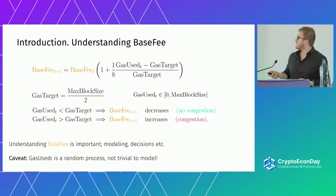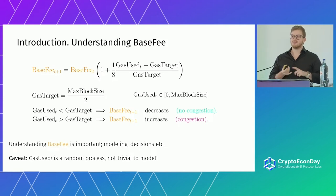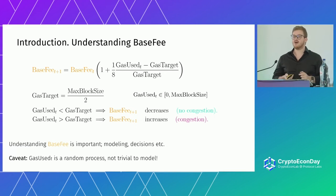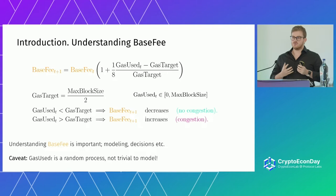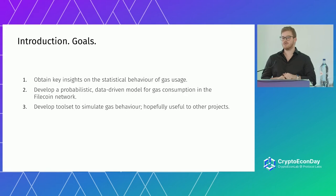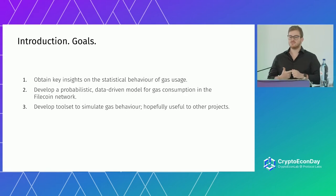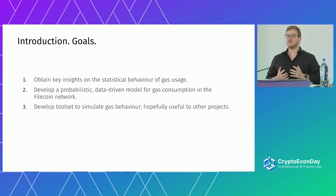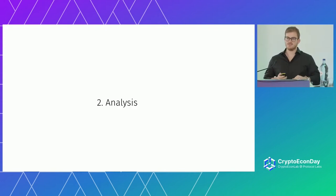However, there's a caveat: this gas used here is a random process because it depends on demand, on the state of the network, on overall sentiment. So it is not trivial to predict or understand it, and one needs to be careful when analyzing it. Motivated by this, when we were writing this project we had three goals in mind: first, to obtain key insights on the statistical behavior of gas usage; second, to develop a probabilistic and data-driven model for gas consumption in the Filecoin network; and third, to develop a tool set to simulate this gas behavior in hopes that it can be useful for other projects.